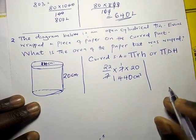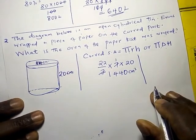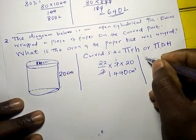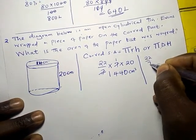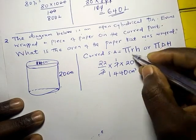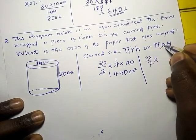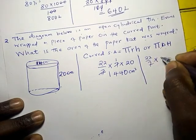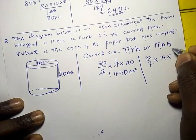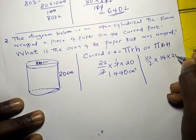Even if you use the diameter formula it gives the same answer. So: 22 over 7 times diameter 14 times height 20.